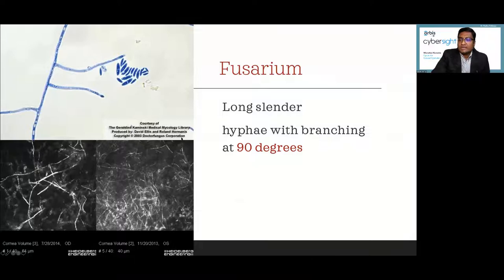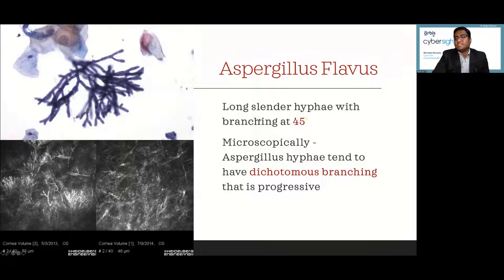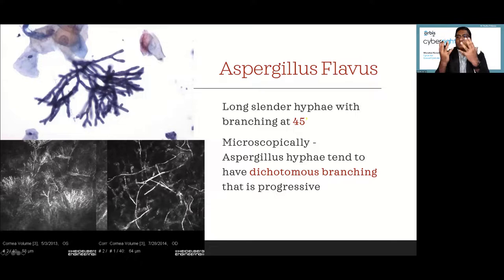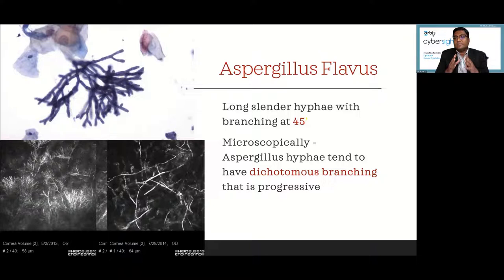Going a step further, if you have confocal access and lesions are not scrapable, you can also try to speciate the fungus. If fungal branches are at right angles, it is more likely fusarium. If the branching is dichotomous at 45 degrees, it is more likely aspergillus. Aspergillus is more arborizing with dichotomous 45-degree branching; fusarium has more right-angle branching. This may not hold with broken filaments or healing ulcers, but with an active deep ulcer with endoexudates, you can often identify the fungal type.